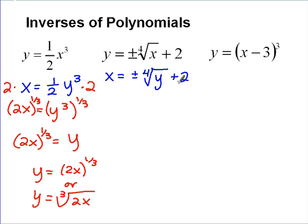I'm going to go through some steps to do that. I'm going to subtract this 2 from both sides. That'll leave me with x minus 2 equals plus or minus the fourth root of y.